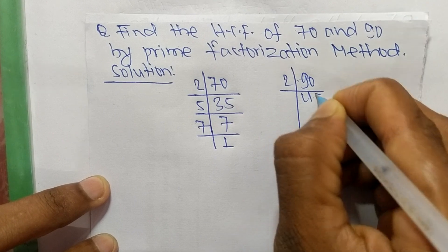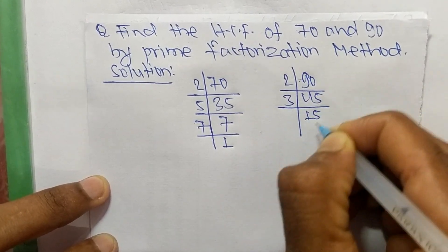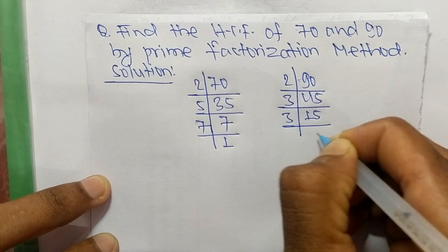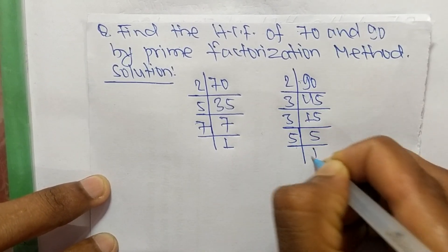3 times 15 means 45, 3 times 5 means 15, and 5 times 1 means 5.